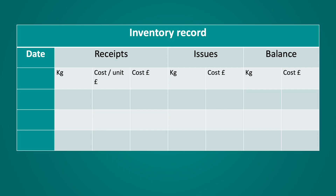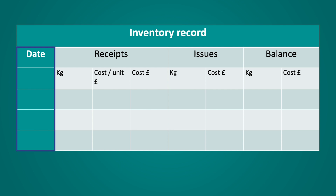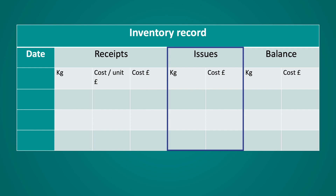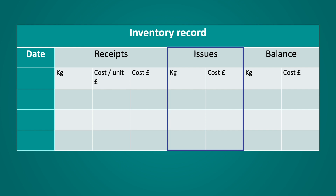You can see on screen now an inventory record card. This is used to show the receipts of inventory, issues of inventory, and the remaining balance after receipt or issue. In the first column we'll show the date of the transaction, the next three columns will cover the details of receipts, the following two columns will show the details of any issues, and the last two columns will show the remaining balance.